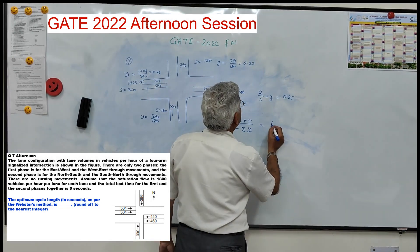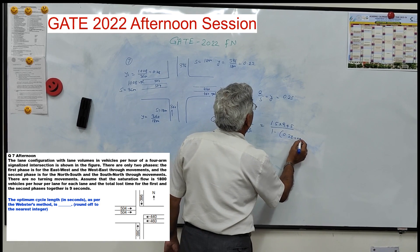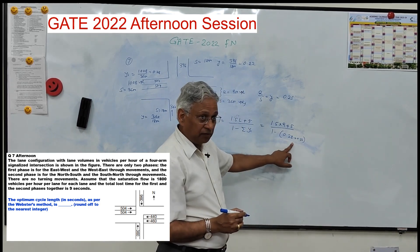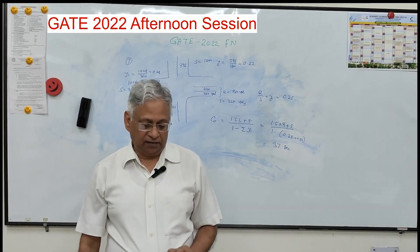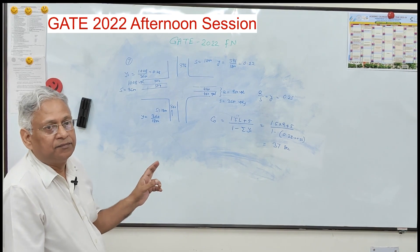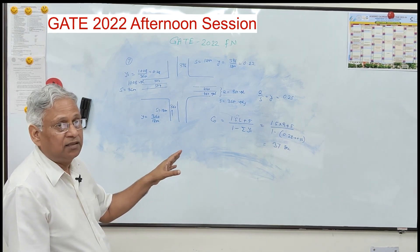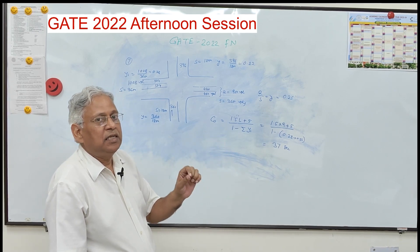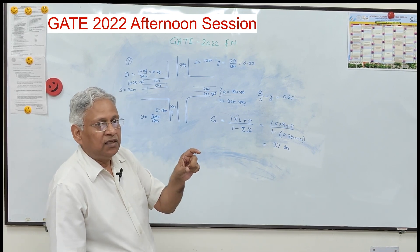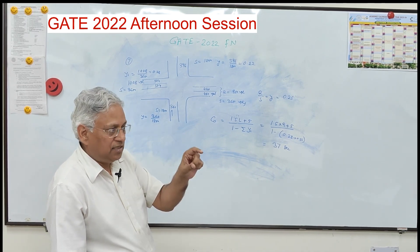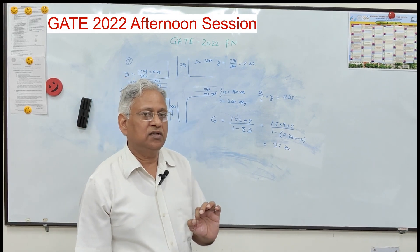Sum of critical flow ratios = 0.28 + 0.22 = 0.50. With L = 9 seconds: Co = (1.5 × 9 + 5) / (1 - 0.50) = (13.5 + 5) / 0.5 = 18.5/0.5 = 37 seconds. Rounded to the nearest integer, the optimum cycle length is 37 seconds.